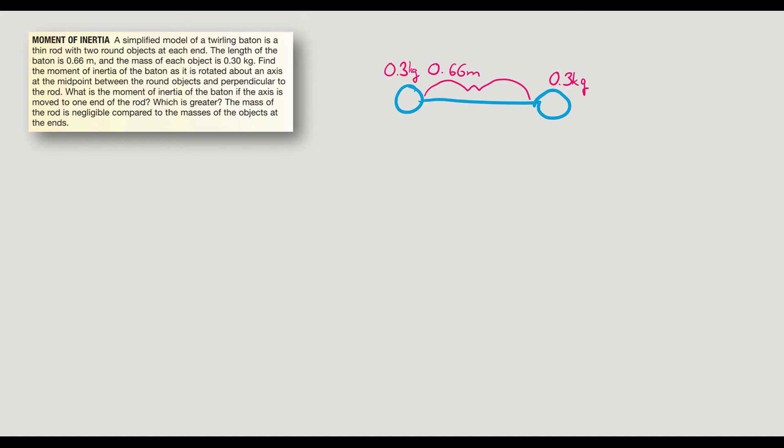And the mass of each is 0.3 kilograms. Find the moment of inertia of the baton if it is rotated about an axis at the midpoint between the two round objects. The mass of the rod is negligible compared to the mass of the objects at the end.